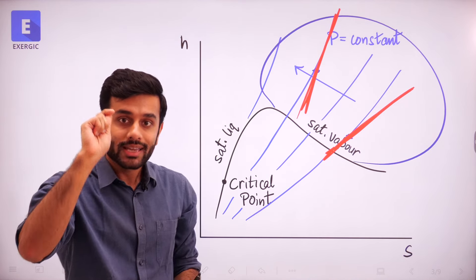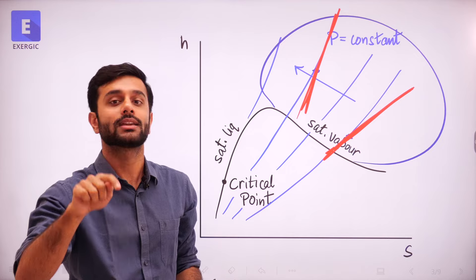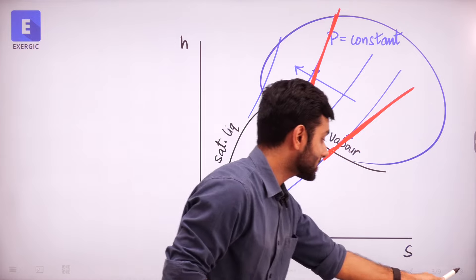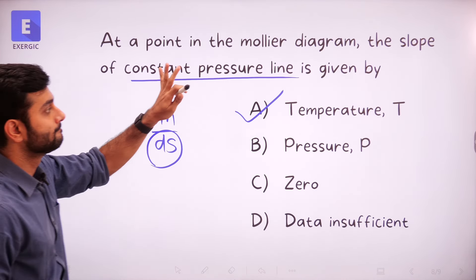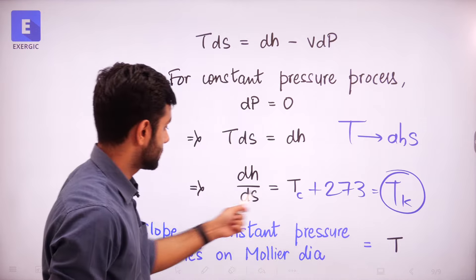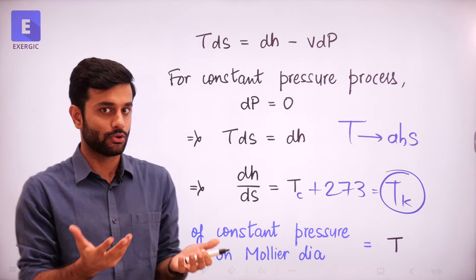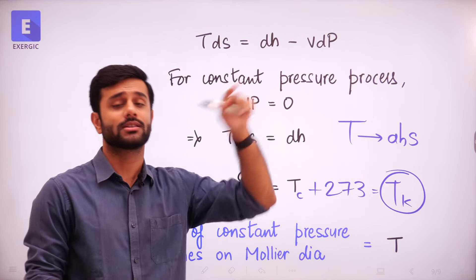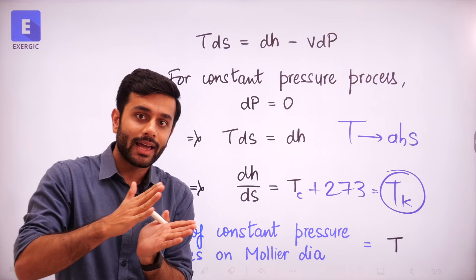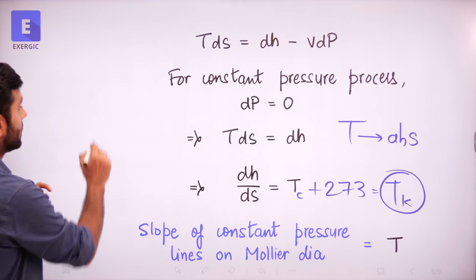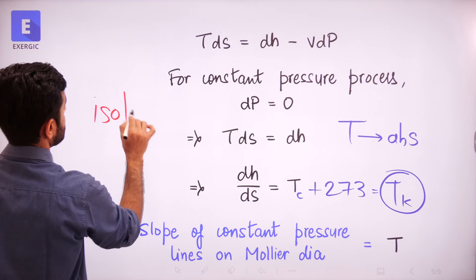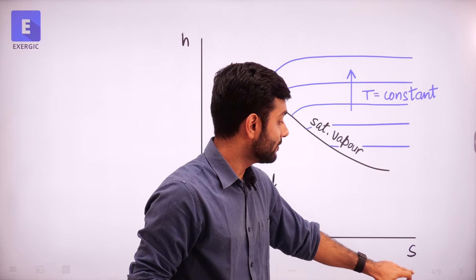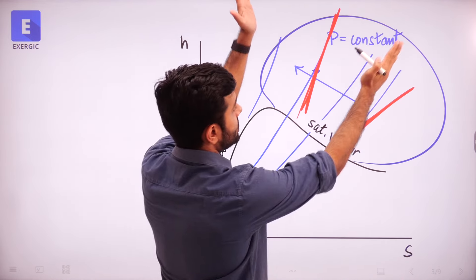All of these things can be asked as theoretical questions in GATE or in other exams about the Mollier diagram. You are expected to remember this result: the slope of a constant pressure line equals T, the absolute temperature in Kelvin, meaning the slope is always positive. Because of this, isobars — lines of constant pressure — in a Mollier diagram diverge from each other. These are the important points related to the Mollier diagram.